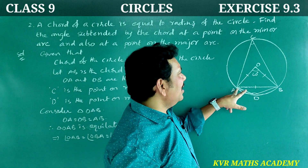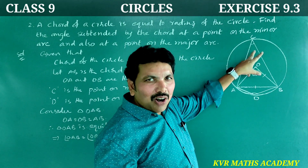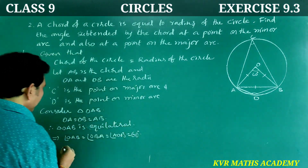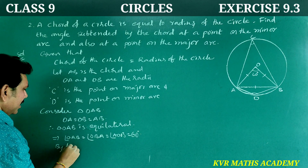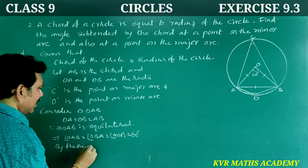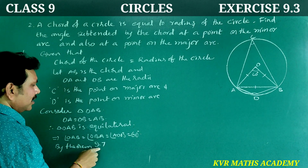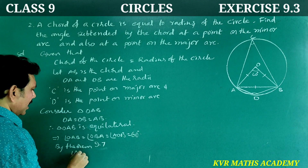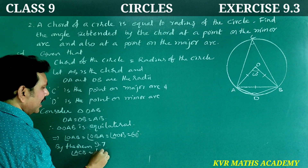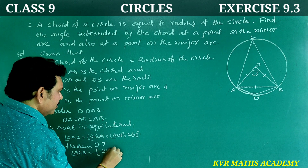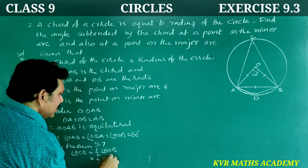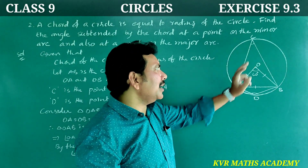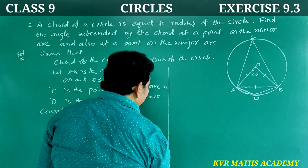By Theorem 9.7, angle ACB is equal to half of angle AOB, that is equal to half into 60, that is equal to 30 degrees. So angle ACB equals 30 degrees.